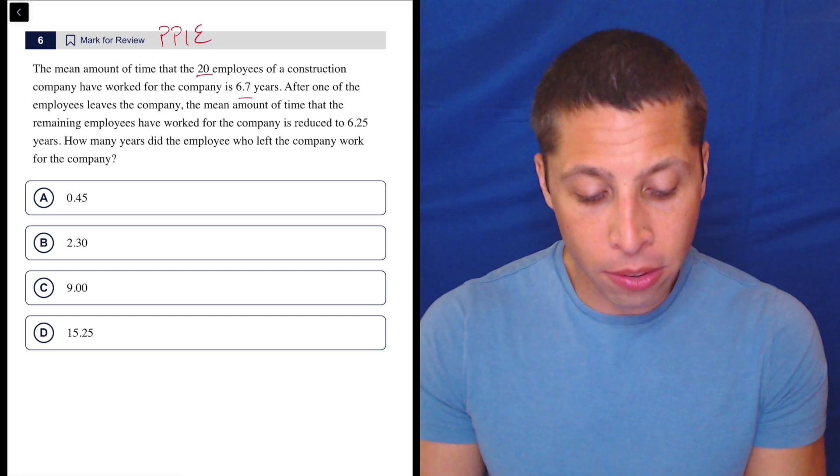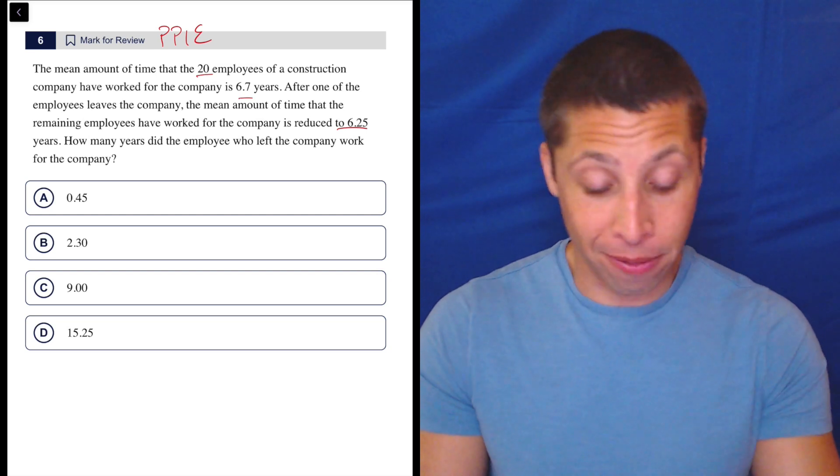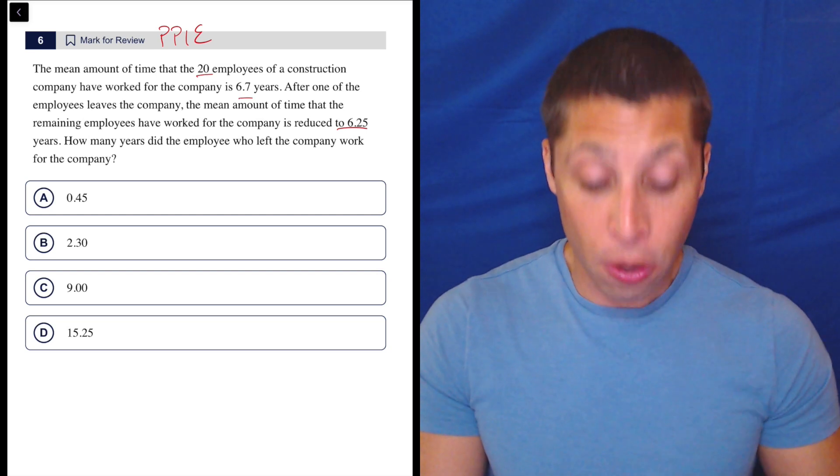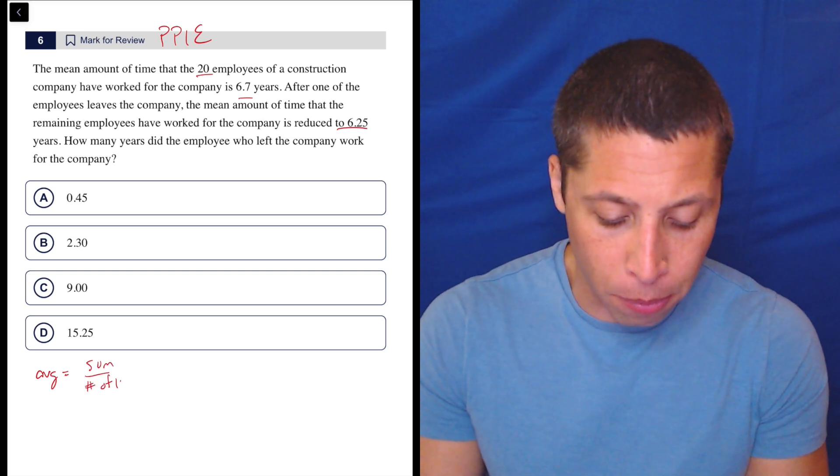We have some points, right? We have a bunch of numbers. What can we plug them into? Well, we can plug them into our basic formula, our equation for average, right? So the average is the sum of the numbers over the number of numbers.